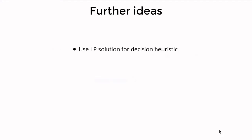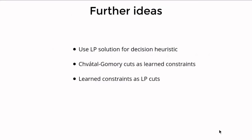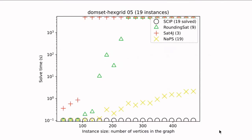In the paper we also investigate how to improve the variable decision heuristic with LP solutions, how to incorporate cut generation into conflict-driven search, and how to use learned constraints as cuts for the LP. The experiment shows solver solve times on the y-axis for increasingly large dominating set problems on the x-axis. The black circles are results of the open-source MIP solver SCIP. Since these instances are rationally infeasible, SCIP has no problem with any of them.